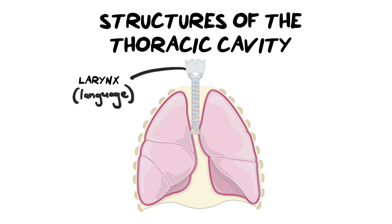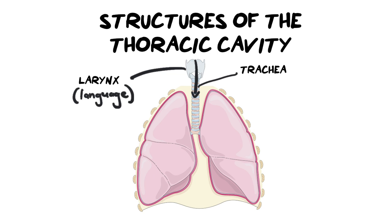As air passes the larynx it moves down into the trachea. The trachea is held open by cartilaginous rings, which give support and structure so your passageway stays open. The trachea is also lined with mucus to trap any foreign particles. This mucus originates partly from your nose and partly from goblet cells — secretory cells that produce mucus — which also provides a little lubrication to help move particles along.